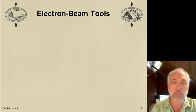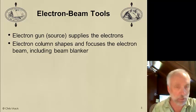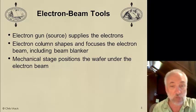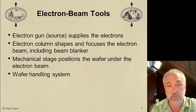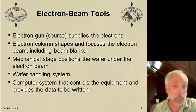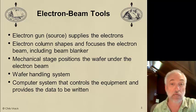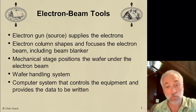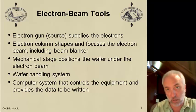Let's look at our e-beam tools. We need several components. First, an electron source called the electron gun, which supplies the electrons to the system — we worry about the brightness of the source to get high throughput. Then the electron column: the lenses that shape and focus the electron beam, including a beam blanker that turns off the beam when we don't want to expose. We have a mechanical stage that positions the wafer underneath the electron beam, using a combination of electrical beam motion and mechanical stage motion to write wafers or masks. We also need a wafer handling system and a computer system that controls the equipment and provides the data — e-beam systems can have requirements of gigabits per second of data to write complicated patterns very quickly.